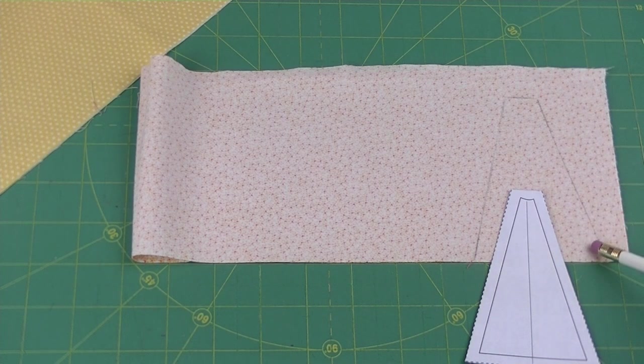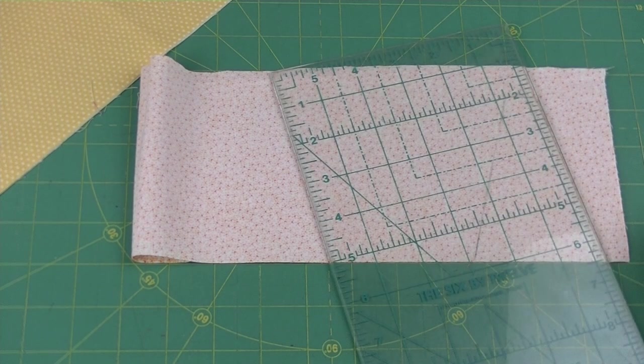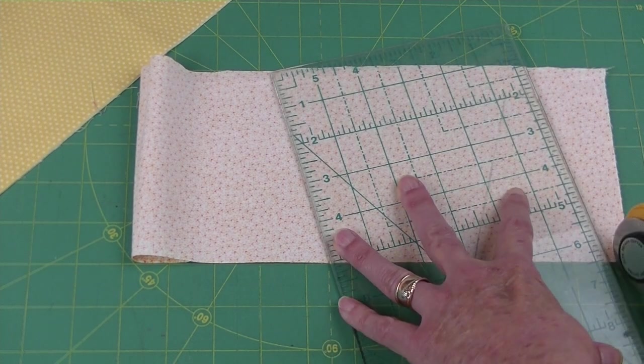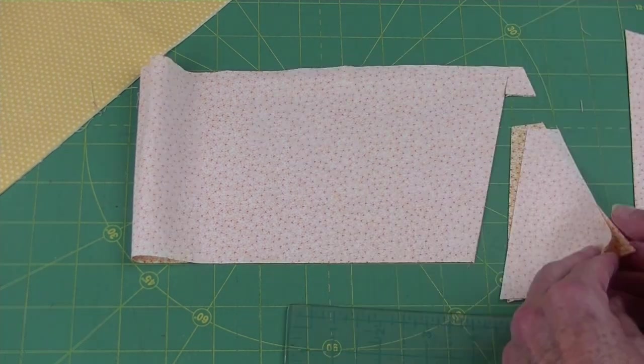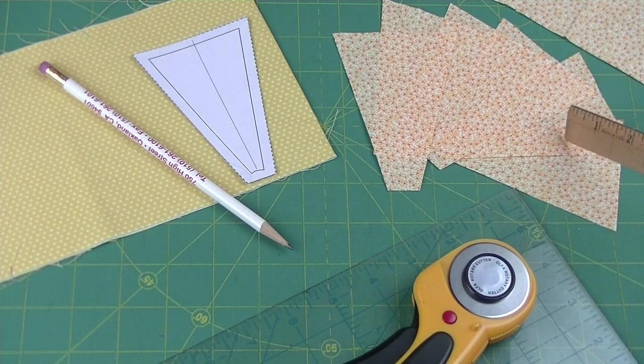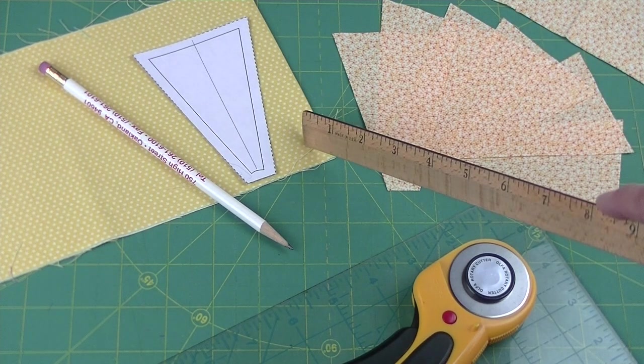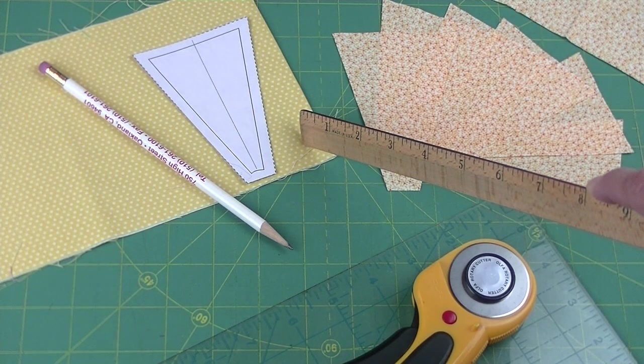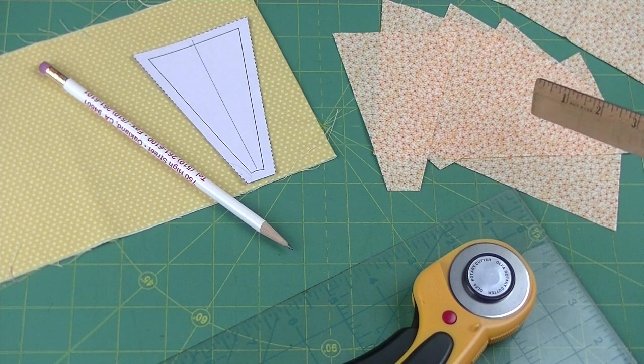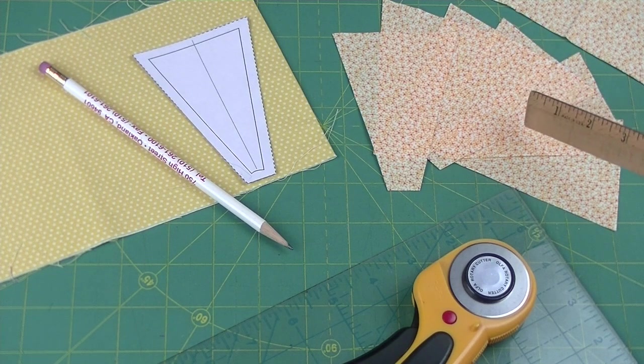You can cut out each one of these individually or layer your fabric and use your rotary cutter cutting out multiples. I cut six wedges from this fabric and then I'll cut six more from this fabric. But you might want them all the same or you can experiment with different combinations.